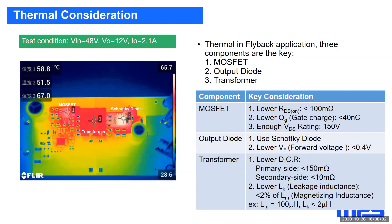Thermal and efficiency is another important consideration in a PD design. Components like MOSFETs, output diode, and transformer dissipate the most heat. Try to use MOSFETs with the lowest RDS(on), gate charge, and VDS rating up to 150 volts. The output diode's voltage drop should be less than 0.4 volts. Design a transformer with DCR less than 150 milliohms for the primary and less than 10 milliohms for the secondary, as well as low leakage inductance.